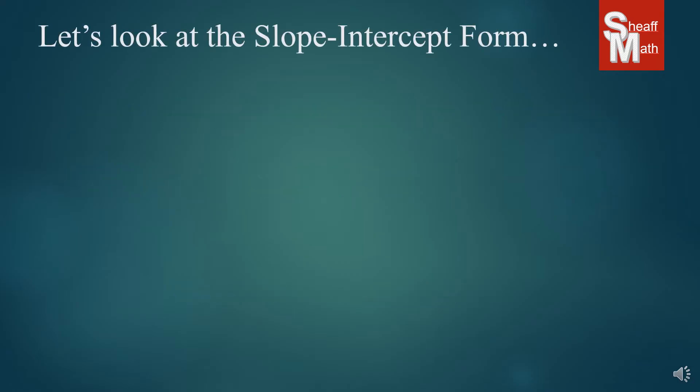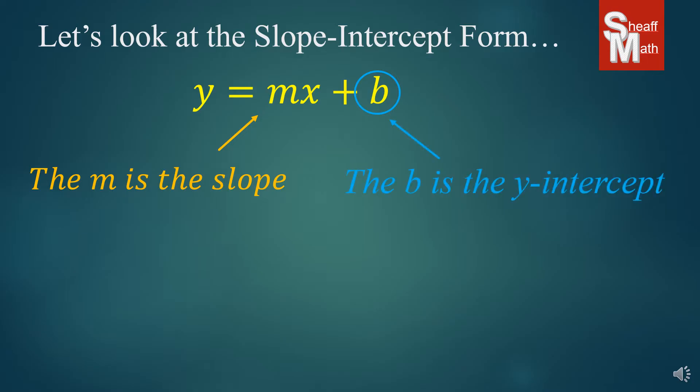First let's look at the slope-intercept form. This is the generic form of the slope-intercept equation: y equals mx plus b. The m represents the slope or the rate of change, how much the line is going up or down from left to right. The b represents the y-intercept or the initial value. Where it crosses the y-axis is the key.